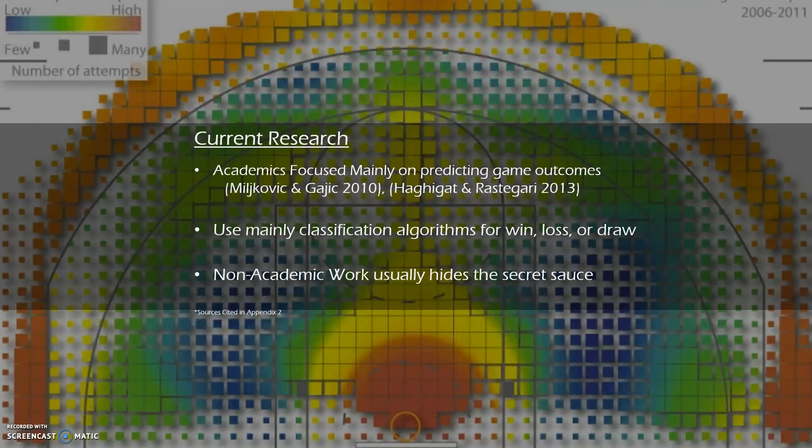A lot of non-academic use, like on Bleacher Report, they put out projections of how many wins they think a team will have. However, they hide the methodology that they use. So hopefully this will shed some light on a possible way to predict wins and losses here.